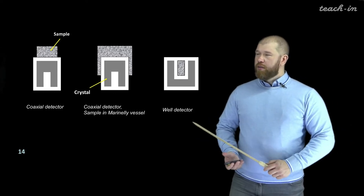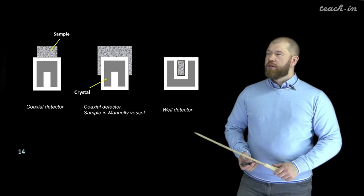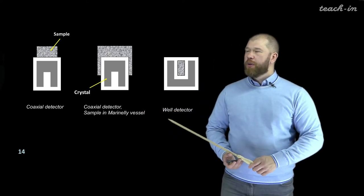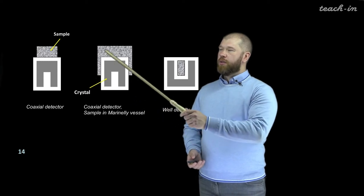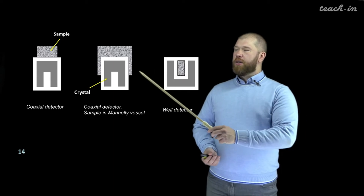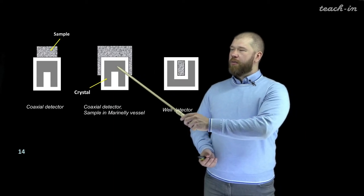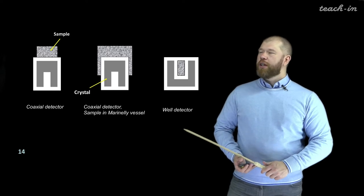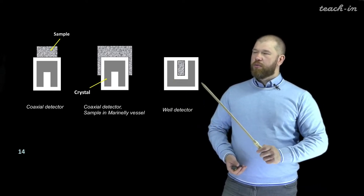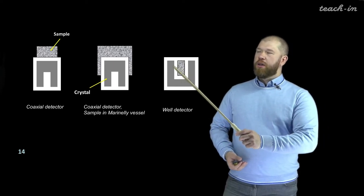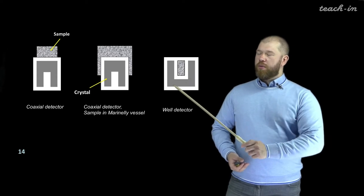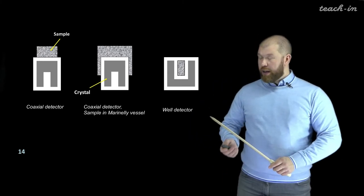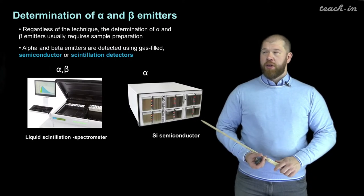The design of the detectors can be different; the geometry of the samples can vary quite a lot. We can place the sample in a Marinelli vessel, thus increasing the number of gamma quanta going directly to the detector and increasing the detection efficiency. Or we can use well detectors and again increase the number of gamma quanta going directly to the detector material, thus increasing the efficiency of detection.